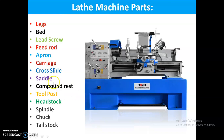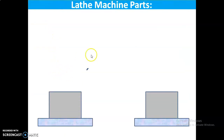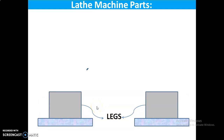First part — legs. These two are the legs of the lathe machine. Legs are used to carry all the loads of the lathe machine. These legs are bolted on the floor to prevent vibration.